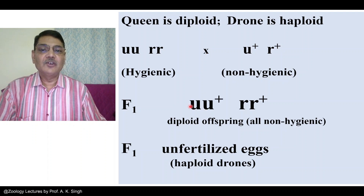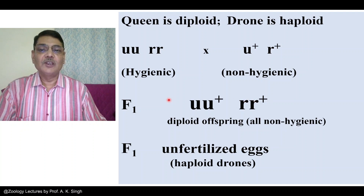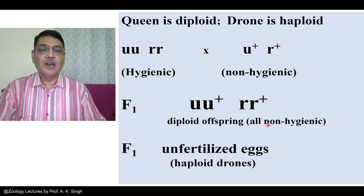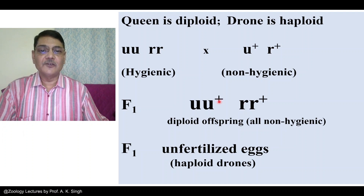In the next generation, the diploid individuals will be U U-plus at one gene locus and R R-plus at the other gene locus. So the females — whether queen or workers — will always be non-hygienic, but they are heterozygous.